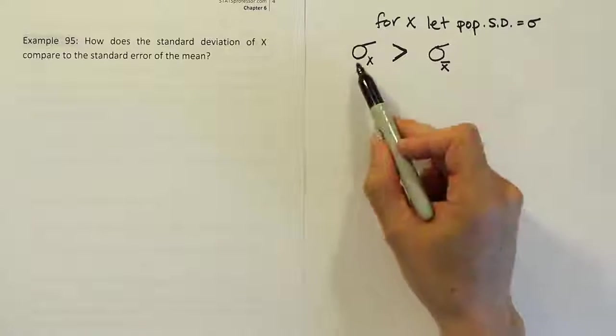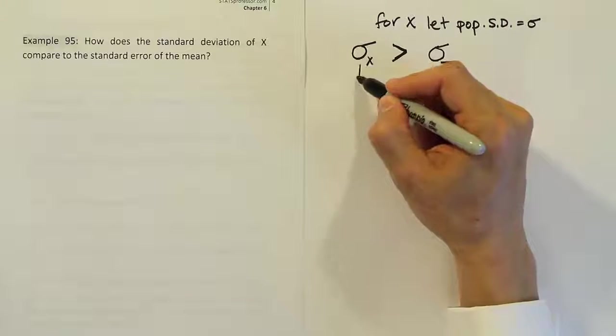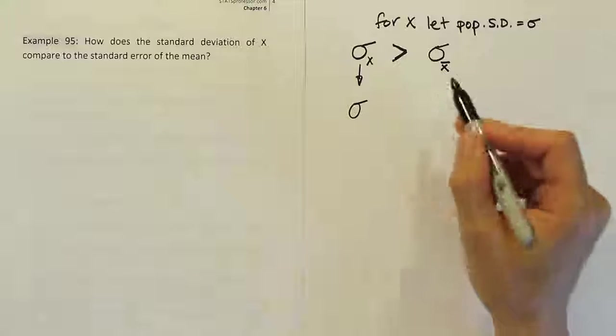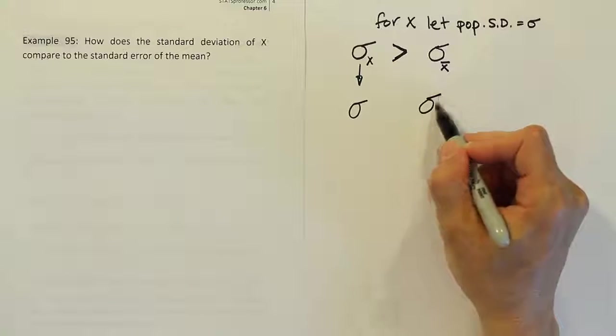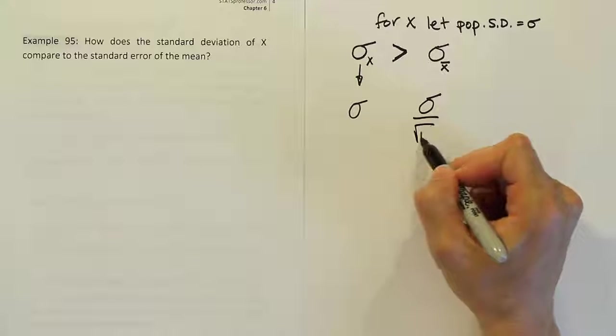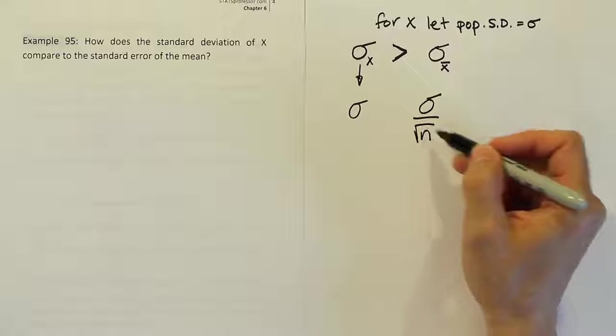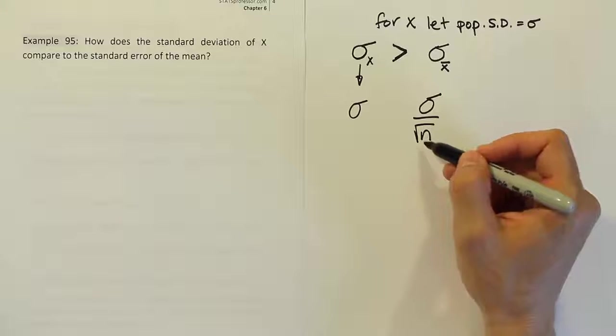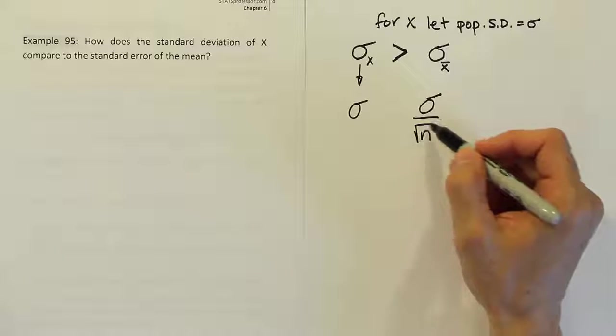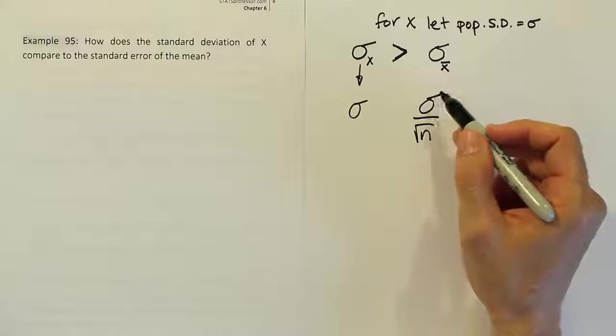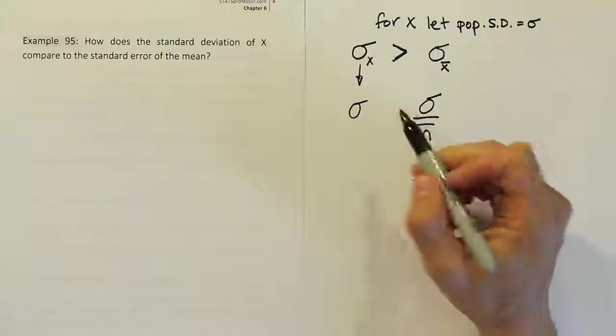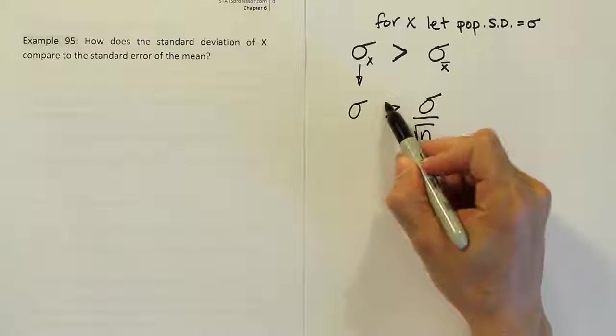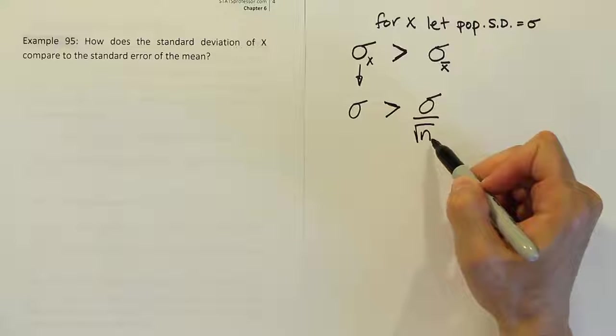The reason why is because the formula for this is very simple—it's just σ—whereas this is the same σ divided by the square root of the sample size. No matter what the sample size is, if it's 2, it's still going to be smaller than it was originally because you take the square root of 2 and divide it into σ, giving you a smaller number as a result.